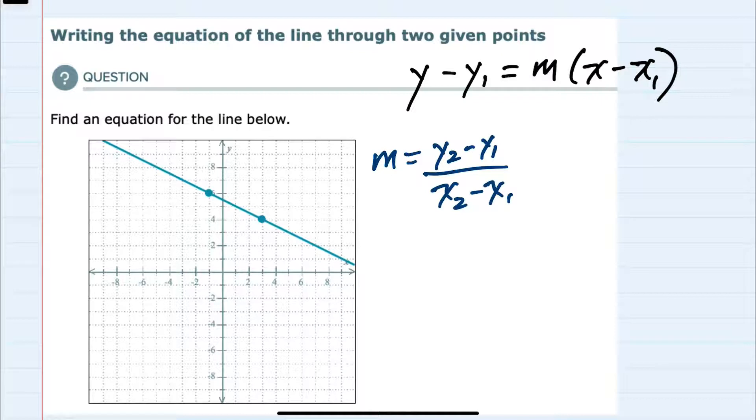And our two points here, I'll call the one on our left x1, y1, which for this point would be a minus 1 x value and a 6 y value. And the other point will be my x2, y2, and it has the coordinates 3, 4.